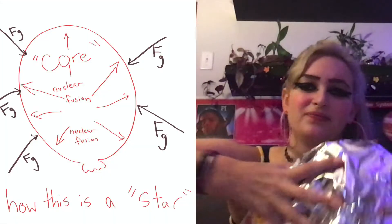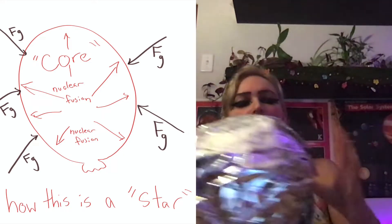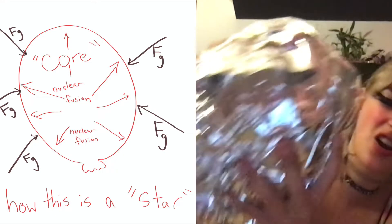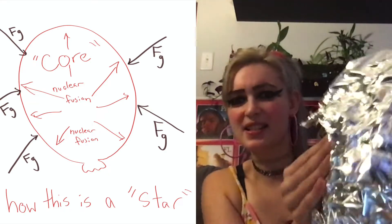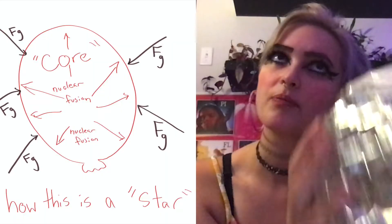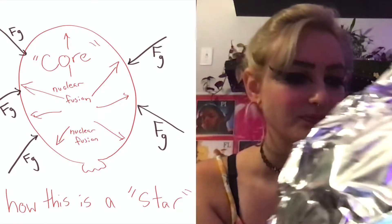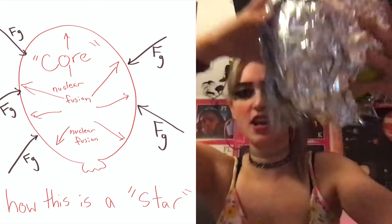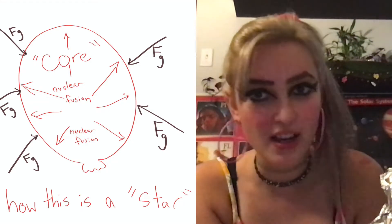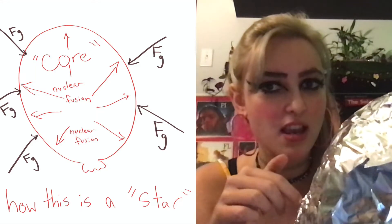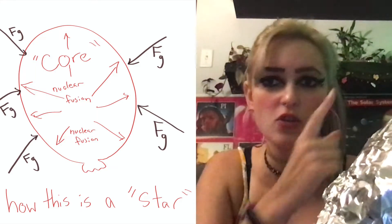If we pretend our hands are gravity and push down on the star, we get resistance — because the air inside the balloon is pushing back on our hands. This models how gravity tries to push inward on all sides of the star, and the only thing keeping the core from collapsing is all of that nuclear fusion pushing outward.